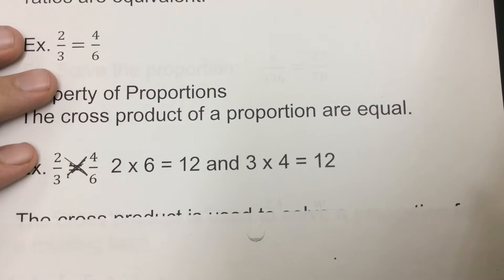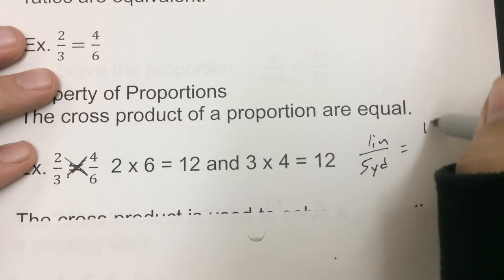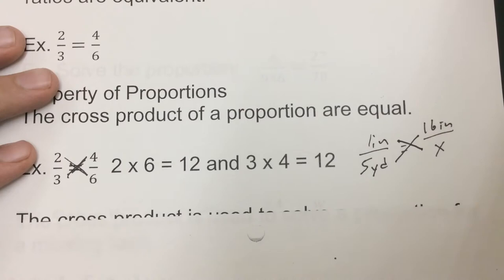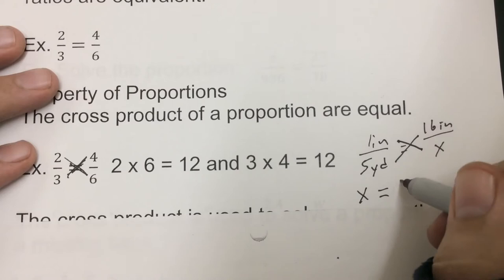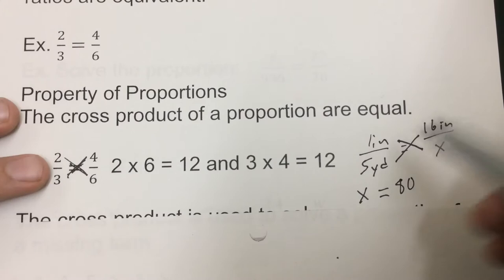So, how this would work, if I use that top one, is if we have 1 inch over 5 yards, and we know that has to be equal to 16 inches over something, if we cross these two, these two would have to be the same. So, 1 times x would have to be the same as 5 times 16, which is 80. That's how we kind of do this.